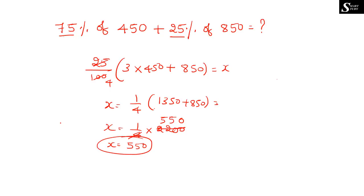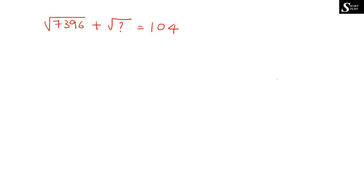I hope you understood. The next question is: √7396 + √(?) = 104. Since the unit digit of 7396 is 6, the square root must end in either 6 or 4. Looking at the first two digits, the nearest perfect square is 8² = 64, and the next is 9² = 81.